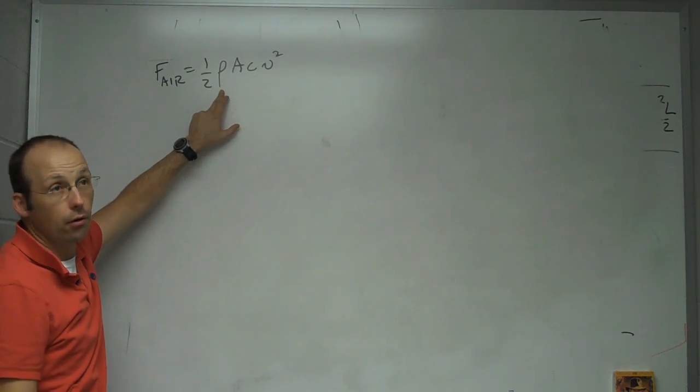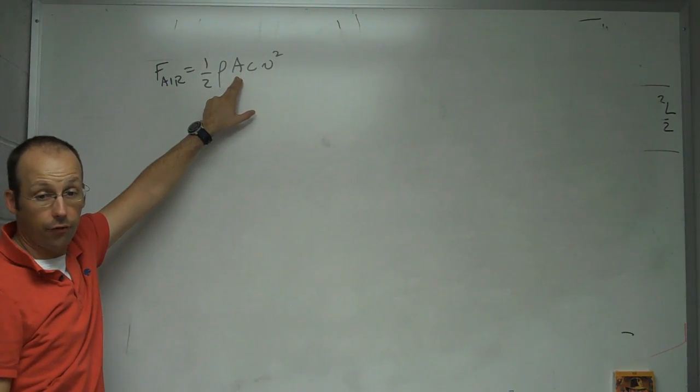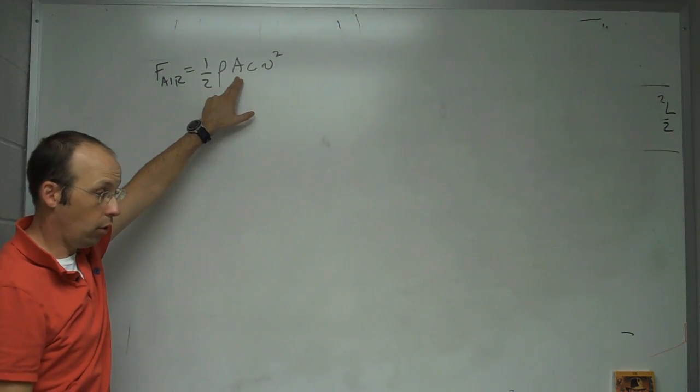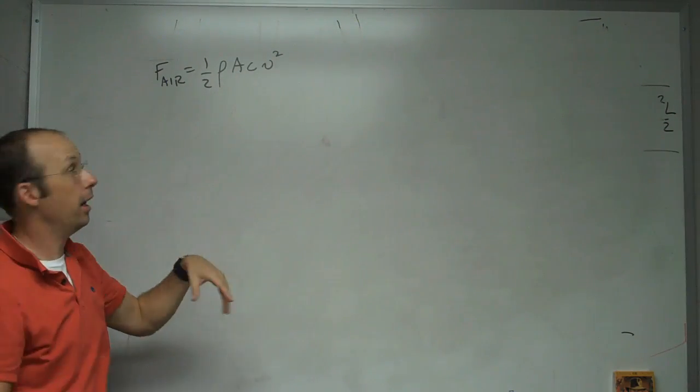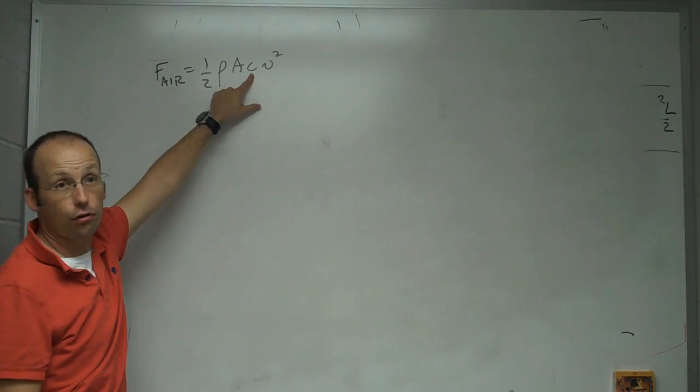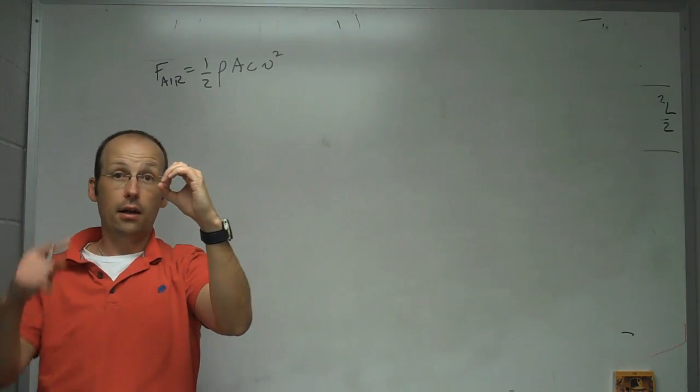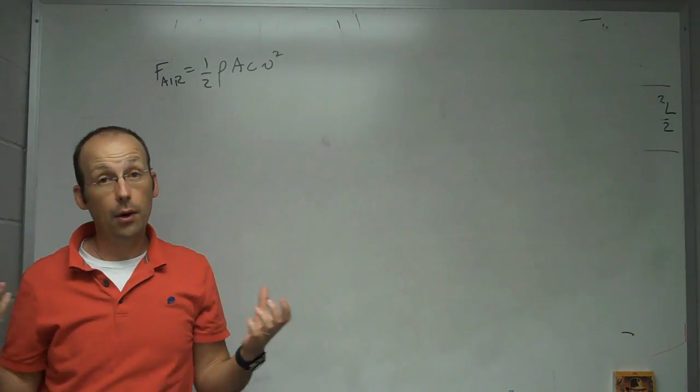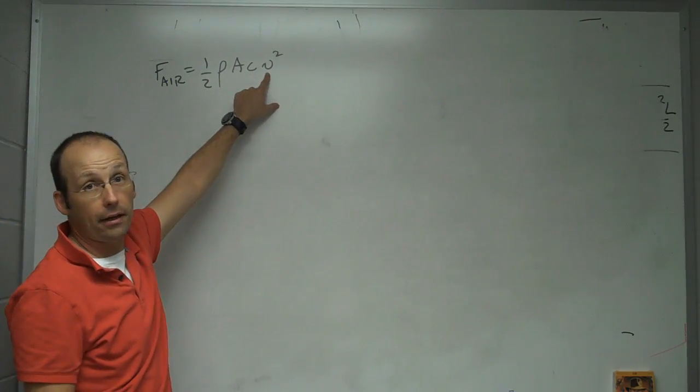Rho is the density of the fluid, the air, or whatever you're in. A is the cross-sectional area of your object. So if you're looking at it head-on, what kind of area would it have? C is a drag coefficient. So if I have a sphere and a flat disc that have the same area, they would have different coefficients. And v is the magnitude of the velocity squared.